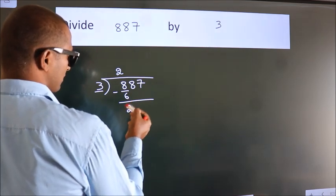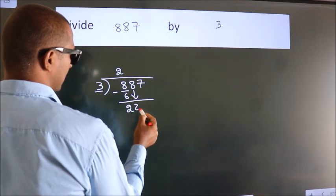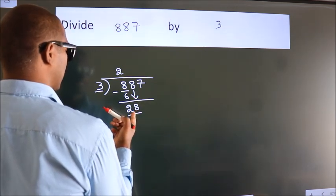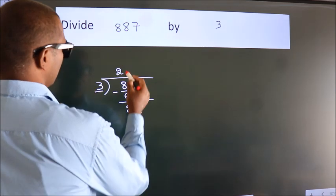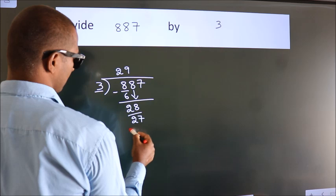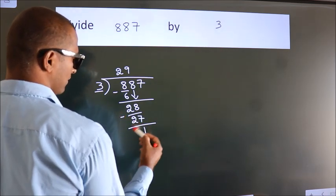After this bring down the beside number. So 8 down. So 28. A number close to 28 in 3 table is 3 times 9 is 27. Now we subtract. We get 1.